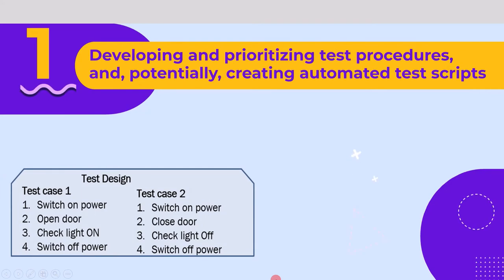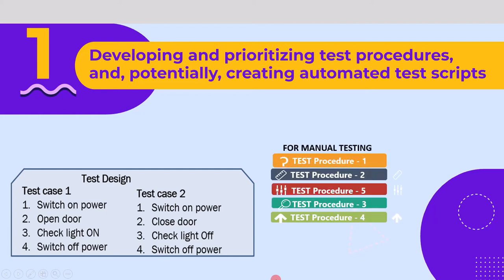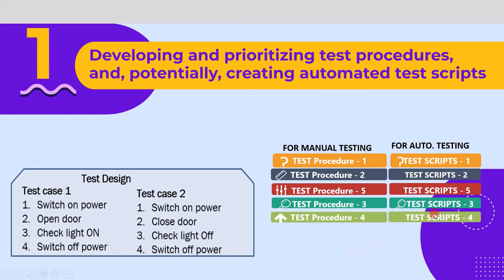The first main task is developing and prioritizing test procedures and potentially creating automated test scripts. We develop test procedures and test scripts from high-level test cases. The test procedure is essentially low-level test cases which contain detailed test actions and are used for manual testing. Test scripts are developed using scripting languages such as Python or JavaScript and used for automation testing. We not only develop test procedures or test scripts, we also prioritize them.